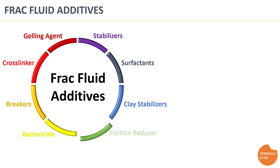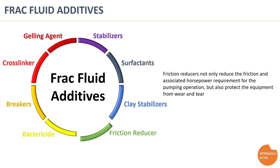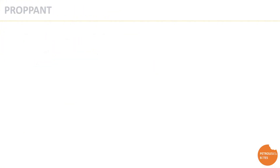Friction reducers reduce the friction and associated horsepower requirements for pumping operations. In addition, they also provide maintenance and protection for equipment against wear. Moving on to proppant — proppant must have several properties to perform its function properly.